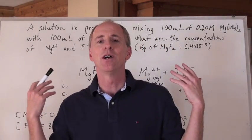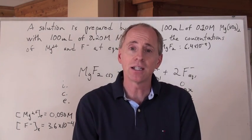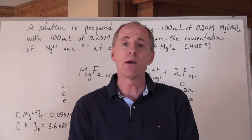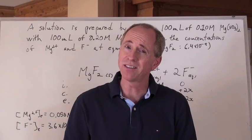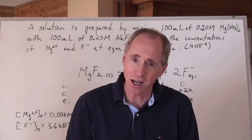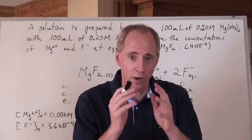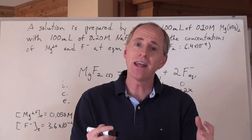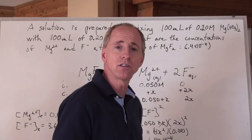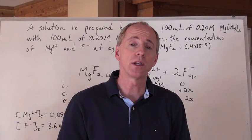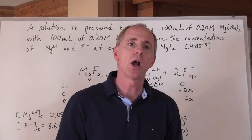In summary: we calculated Q and compared it to K. When Q > K, you have a precipitate. When Q < K, no precipitate forms. When Q = K, you're right at the point of precipitation. To find ion concentrations remaining in solution, first do the stoichiometry to completion, then set up and solve the equilibrium problem.